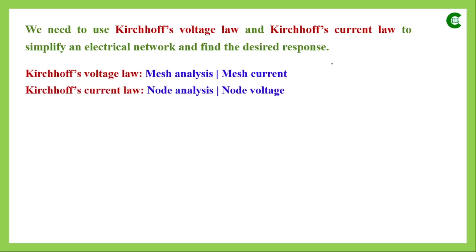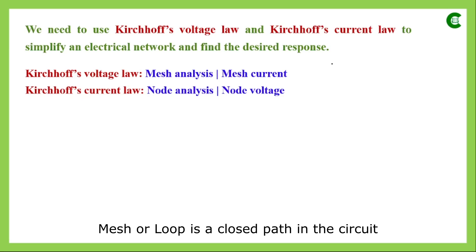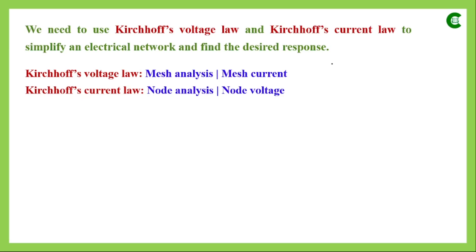When we apply KVL in an electrical network, first we identify the meshes or loops in that network. After identifying the meshes, we assume the mesh currents in each mesh or loop. When we apply Kirchhoff's current law, we first identify nodes or principal nodes in that electrical network, and after identifying the nodes, we assume node voltage at each node.